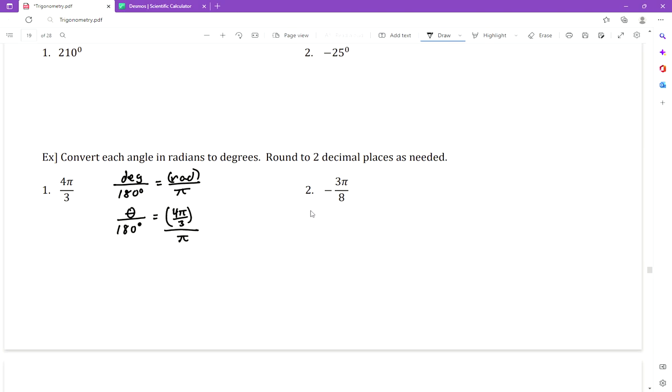So we have θ over 180 equals our radian measure, which is 4π/3. You get this nasty looking fraction, however every time that you have π involved in the numerator of your given angle, the π here and the π there will cancel out every time. Pis cancel.